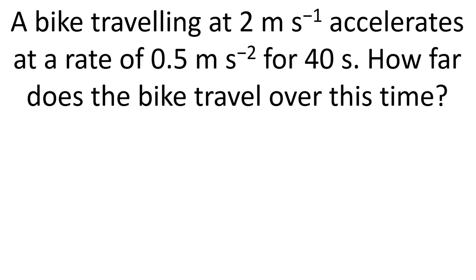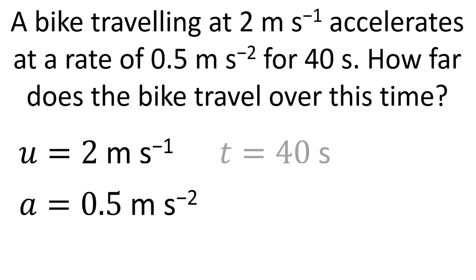Final problem then. A bike travelling at 2 metres per second accelerates at a rate of 0.5 metres per second squared for 40 seconds. How far does the bike travel over this time? Again, extracting the variables that we know and identifying the one that we want to find out.